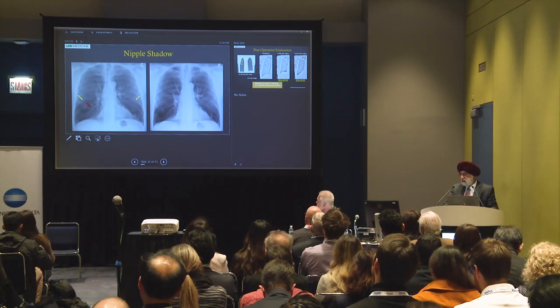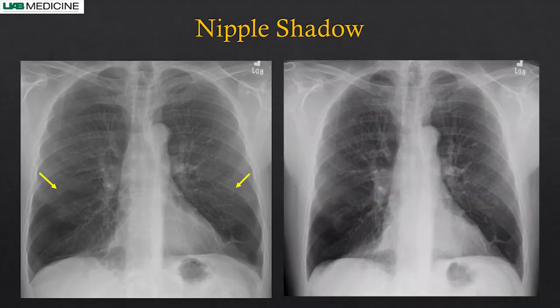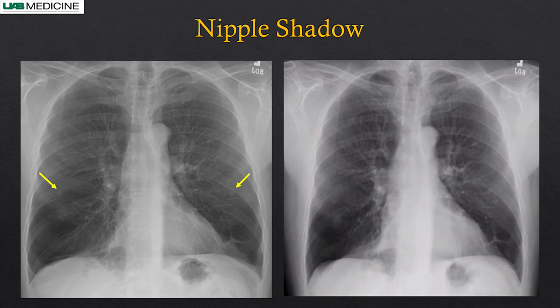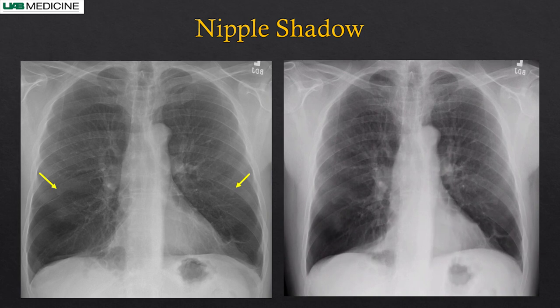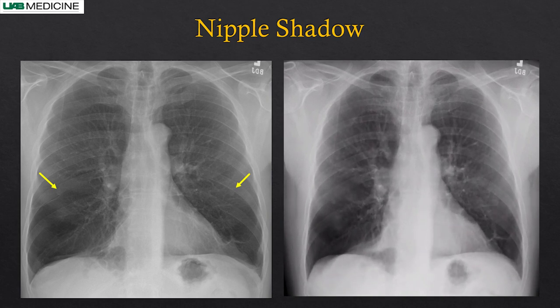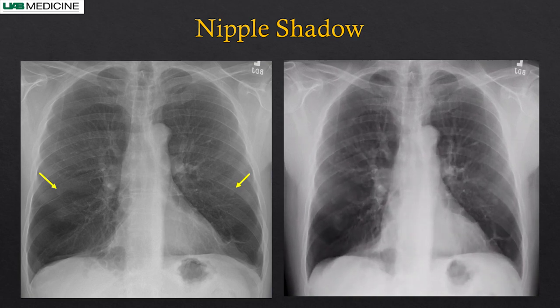We've all seen nipple shadow cases. If symmetrical, they're easy to confirm, but if on one side it can be difficult—their location is typically around the fifth or sixth rib anteriorly. With DDR, you can clearly see that the nipple shadows do not move with the regular lung motion, confirming this is outside the patient. In one examination you can do it, whereas otherwise you might need nipple markers and a repeat examination.